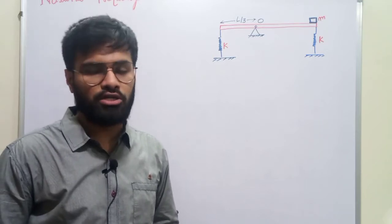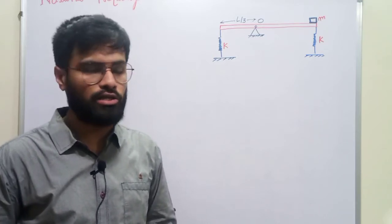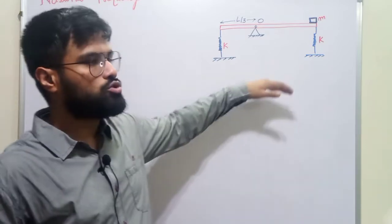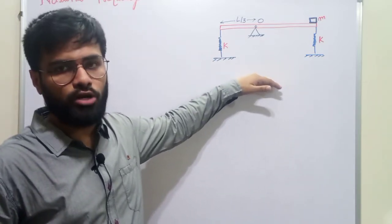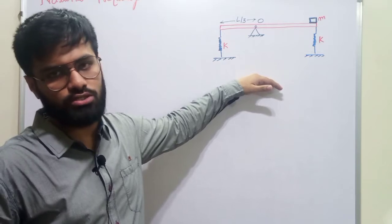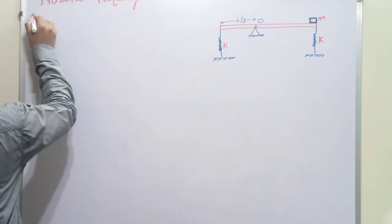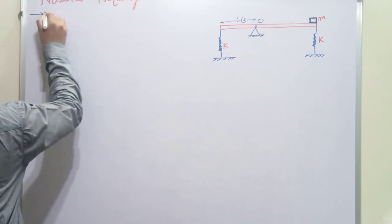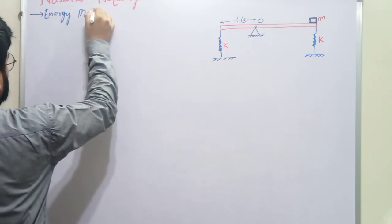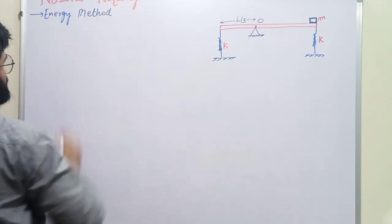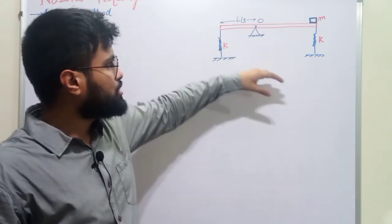We have different kinds of methods to find out the natural frequency for any mechanical system — like the energy method, the equilibrium method, and the Rayleigh method. I will use the energy method to solve this problem and find the natural frequency of this system.